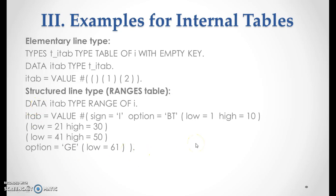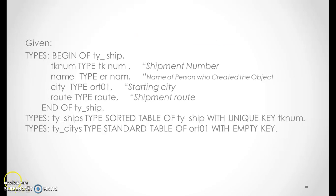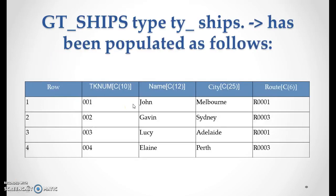Then we have the FOR operator. Definition: FOR wa / field-symbol IN ITAB INDEX INTO IDX [ WHERE condition ]. This effectively causes a loop at ITAB — for each loop row, the read is assigned to a work area or field symbol. This work area or field symbol is local to the expression. The index works like SY-TABIX in a loop. Example structure: begin of TY_IS_SHIP with shipment data as the regular declaration.